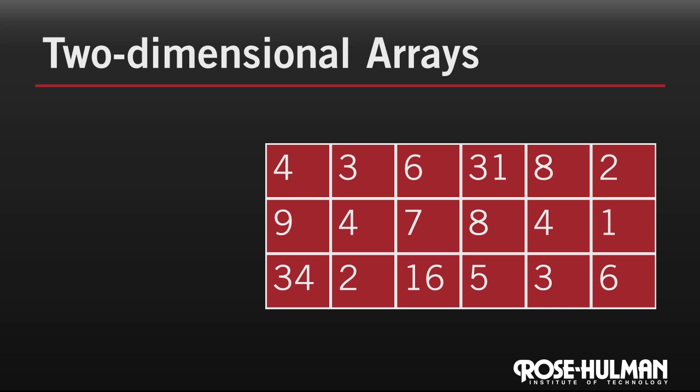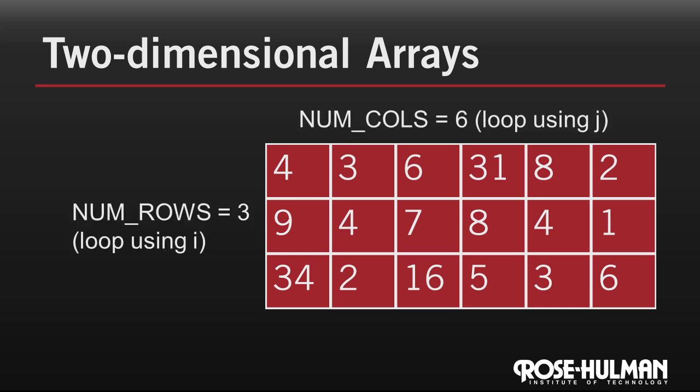We can visualize them as a matrix, like shown. When we use 2D arrays, we also declare and use two constants, numRows and numCalls, for the height and width of the matrix, here 3 and 6.